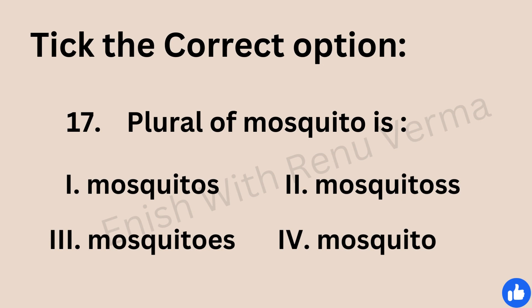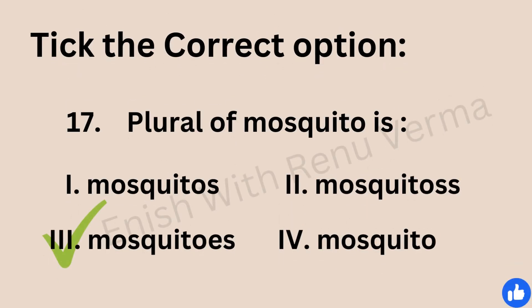The plural of 'mosquito'. The options are mosquitoes or mosquitos. We add 'es' because nouns that end with 'o' mostly form their plural by adding 'es'. So the correct answer is 'mosquitoes'.